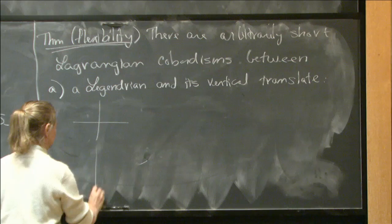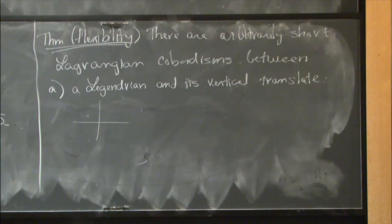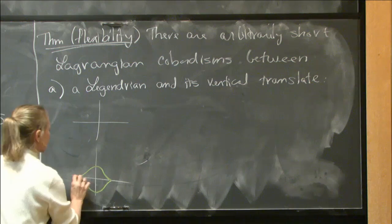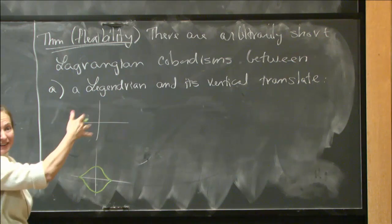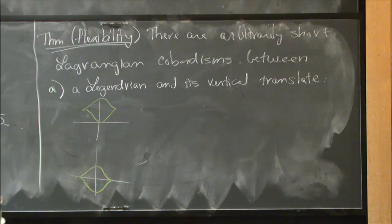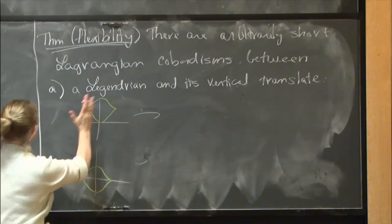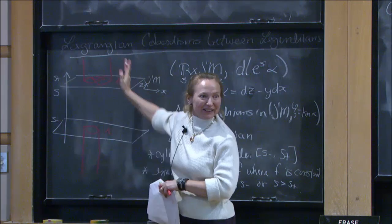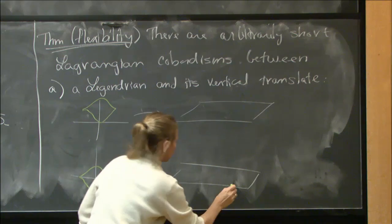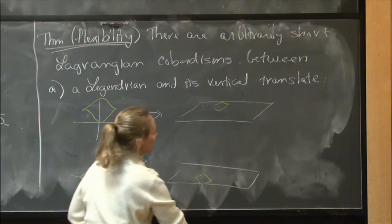So let's just take a Legendrian down here and shift it up in the Z direction — it doesn't matter, any direction, positive or negative. Basically, this is essentially zero, meaning that I can get it arbitrarily close to zero. Another natural example: a Legendrian and its horizontal translate in the base manifold — that's also going to be approximately zero. You can generalize this further — any diffeomorphism of the base isotopic to the identity.